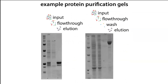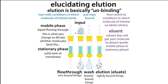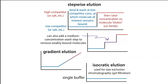Once your protein is bound, there may still be some other proteins lingering, so you need to wash the column. During washing, you might use the same mobile phase used for your input — mild conditions under which your protein binds but other things don't. However, you might still have some lingering contaminants, so you can increase the competitor concentration or change the pH partway — not enough to get your protein to come off, but enough to release proteins that are more weakly bound.